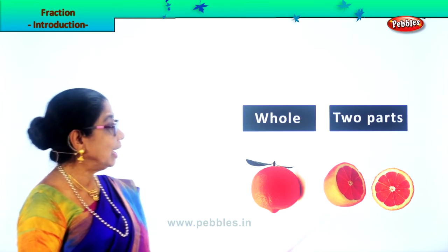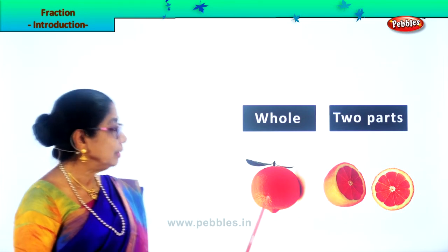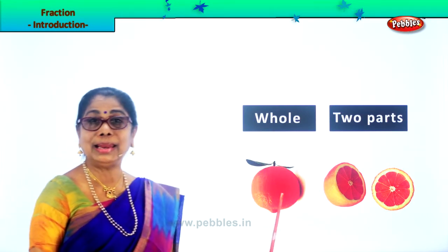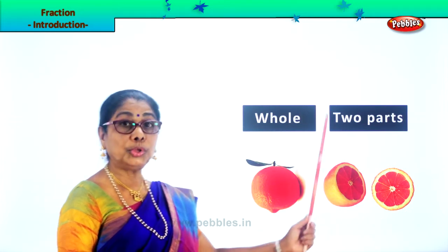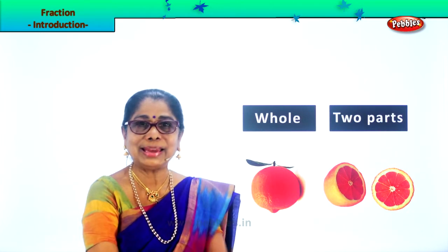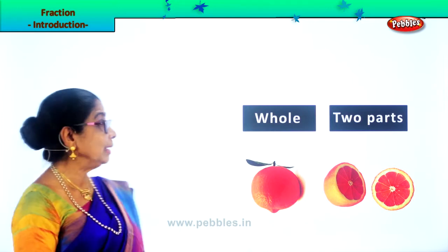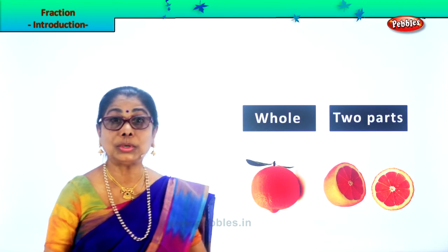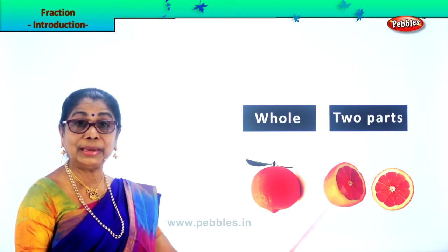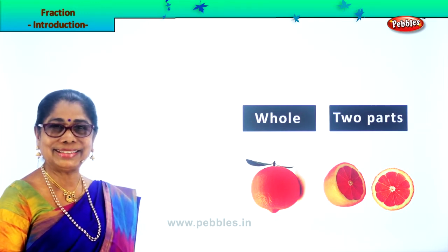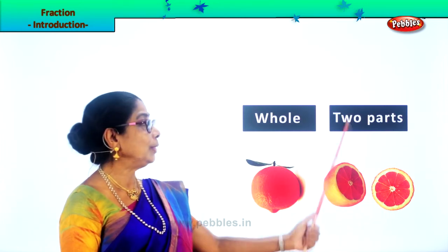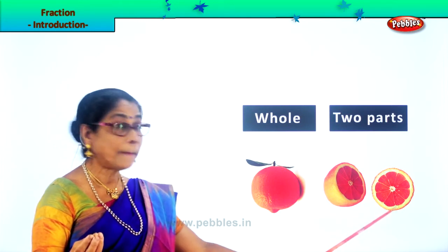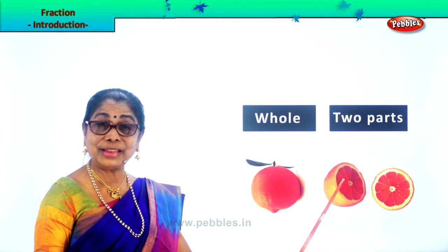Here is a lemon. Do you like lemon juice? Here is a whole lemon. Let's cut the whole lemon into two halves, two parts, so that we can get juice. Put a little sugar — yummy! So the whole lemon: this is one part, half of the lemon, and this is the other half. What is fraction? Part of a whole. This half lemon is part of this whole lemon. The lemon is cut into two parts — fraction is part of a whole.